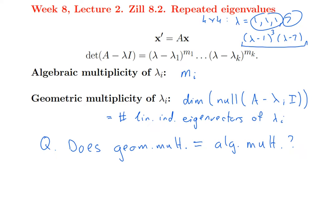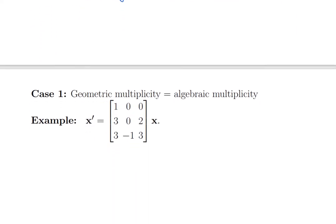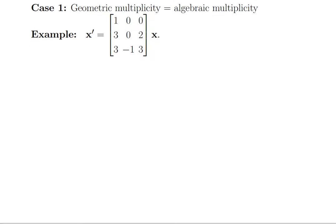So today we'll do an example where you do have enough eigenvectors. This is Case 1, where the geometric multiplicity does equal the algebraic multiplicity — which you won't know ahead of time; you won't know until you actually write down A minus lambda I, start trying to find the eigenvectors, and count up how many there are. Okay, so let's do this example.